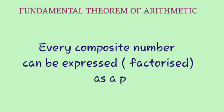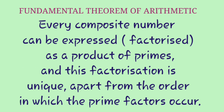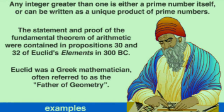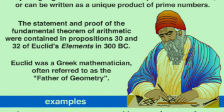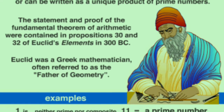Here we have the statement of the fundamental theorem of arithmetic: every composite number can be expressed as a product of primes, and this factorization is unique apart from the order in which the prime factors occur. In other words, any integer greater than 1 is either a prime number itself or can be written as a unique product of prime numbers.